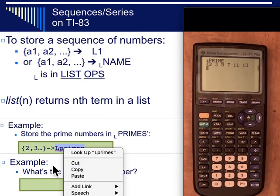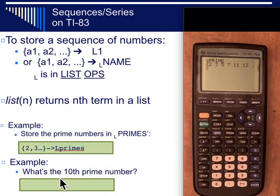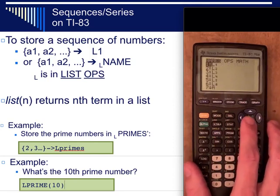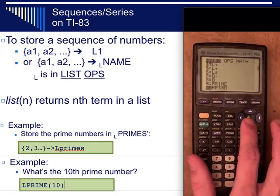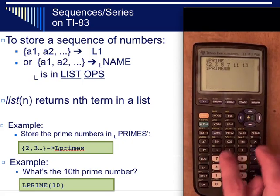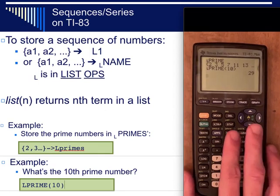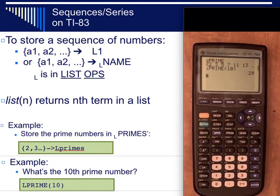If you wanted to know what the tenth number in a list is you can do that by typing the list and then in parentheses putting the term number. So if I have this list in primes I should be able to do L primes parentheses ten and it ought to be able to tell me the tenth number that's in that list. So let's try that a second. Second list, go down to list prime and then in parentheses put ten and yeah, tenth number in that list was twenty-nine.